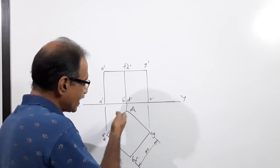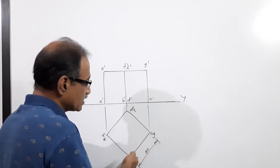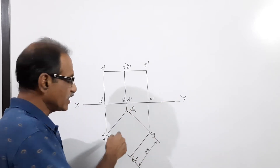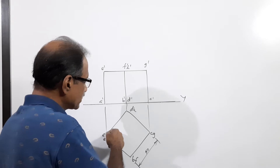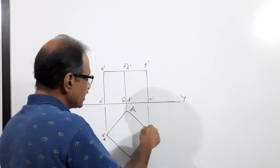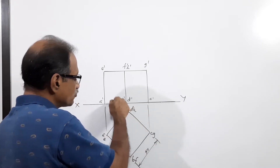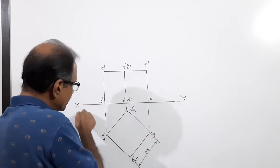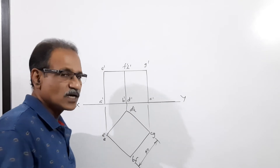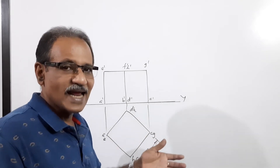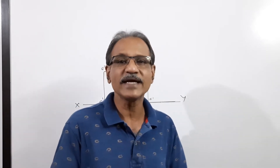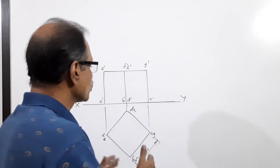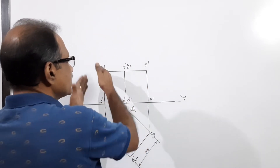All lateral faces are equally inclined to VP at 45 degrees. Draw the elevation — the elevation is a rectangle.